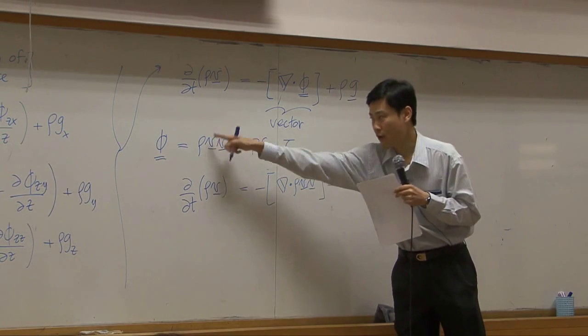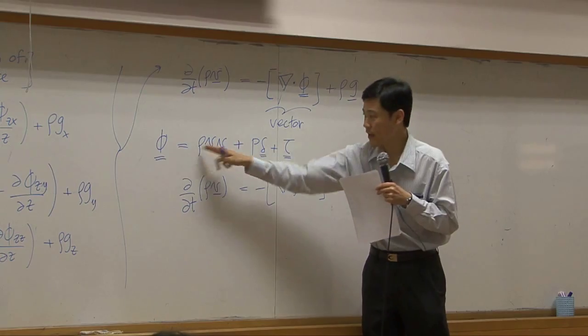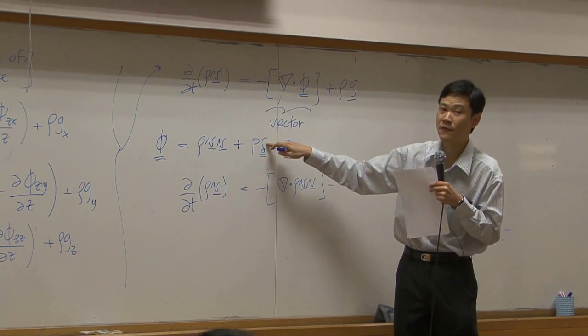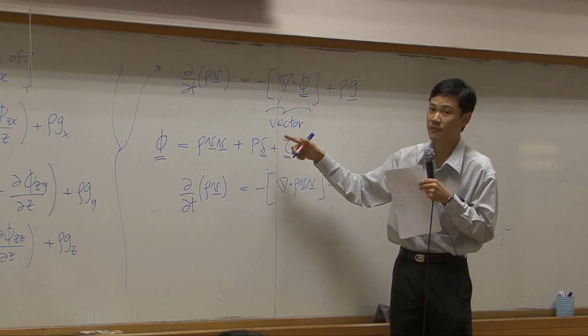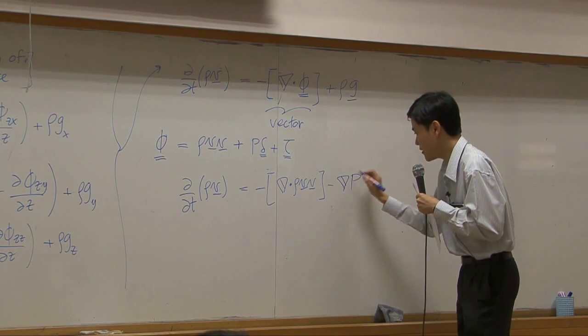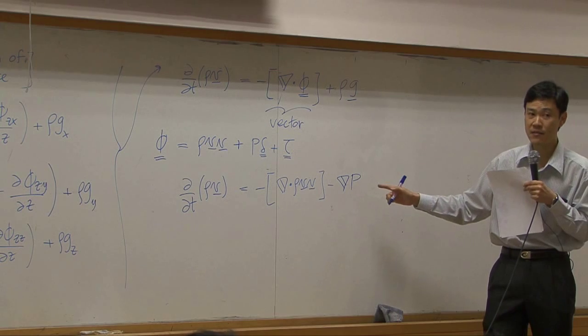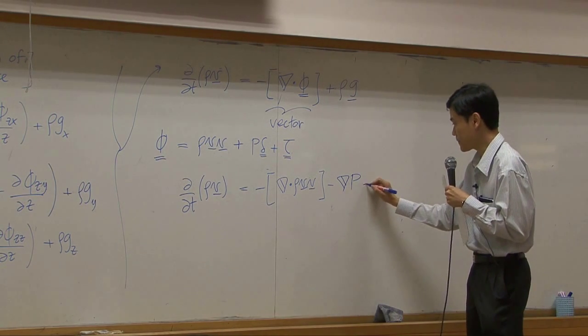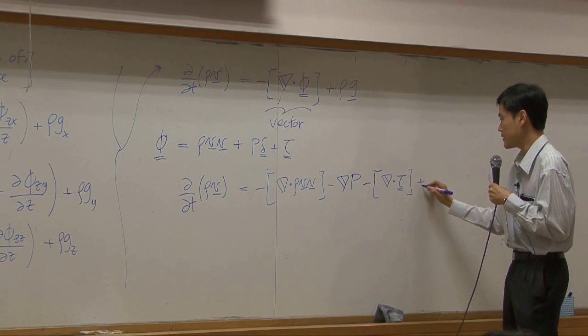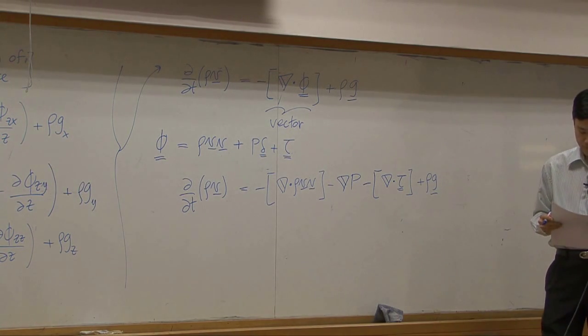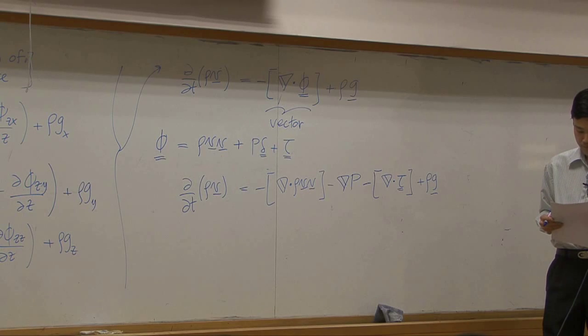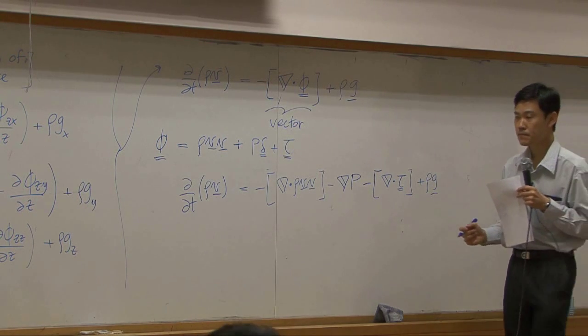Del dotted with the whole thing here. You can take del to each term. So del dot the first term, you get this one. Del dot the second term. This one, fortunately, is a tensor with one in a diagonal direction. So del dot that direction, you end up with del P. It's not dot anymore. And then, the last term, you have del dot tau plus rho G.